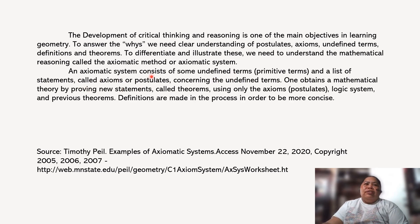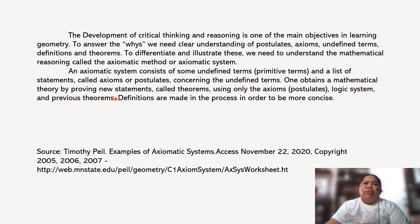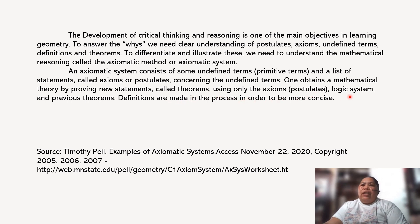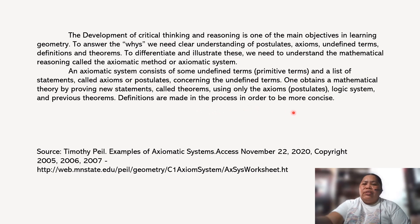An axiomatic system consists of some undefined terms — that's primitive terms — and a list of statements called axioms or postulates concerning the undefined terms. One obtains a mathematical theory by proving new statements called theorems using only the axioms or postulates, the logic system, and the previous theorems. Definitions are made in order to be more concise.